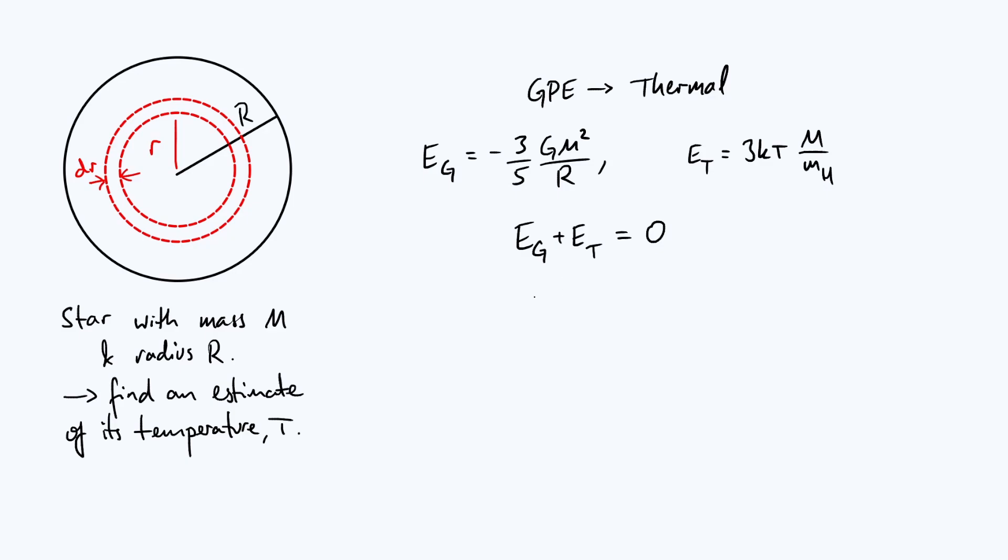So anyway, the conservation of energy equation implies that three fifths of GM squared over R is equal to three kT big M over MH. Then the threes cancel and one of the M's cancels from each side and you rearrange it for T. You find that temperature is approximately GMM_H divided by five kR.